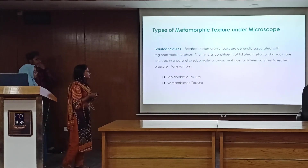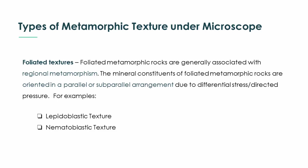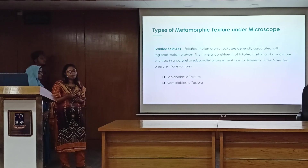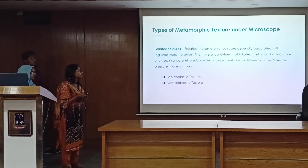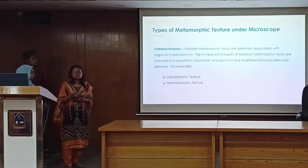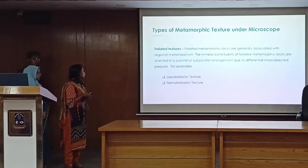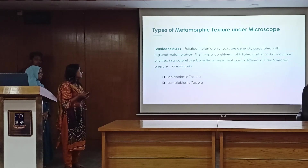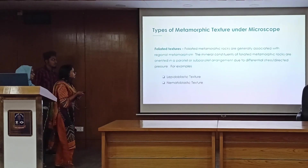Next, I will focus on foliated texture. This is generally associated with regional metamorphic rocks, and the constituent minerals are arranged in a parallel or sub-parallel arrangement with reference to a directional pressure. Some important examples of foliated texture are lepidoblastic texture and nematoblastic texture.